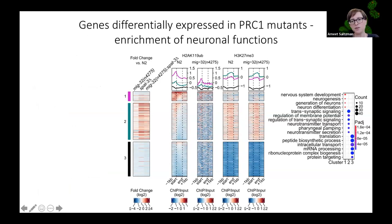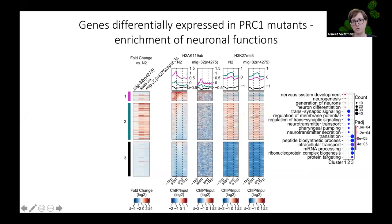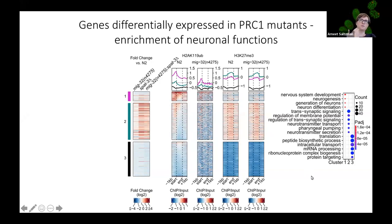Looking at functional enrichment of differentially expressed genes in PRC1 mutants, similar to the ChIP-seq ubiquitylation data, we see enrichment for nervous system-related functions in the first two clusters where the ubiquitylation signal is also present. This is really exciting given the neuronal defects in these animals, although the genes underlying those defects are not yet known. Differentially expressed genes are also enriched for H2A ubiquitylation-marked enhancers.